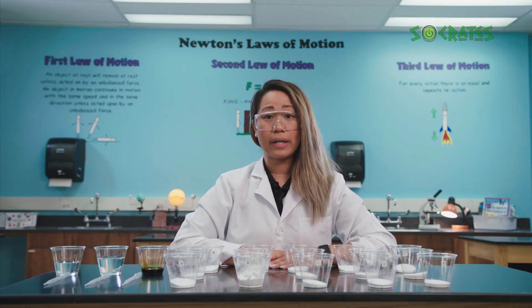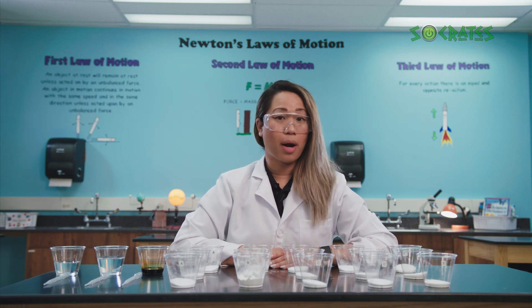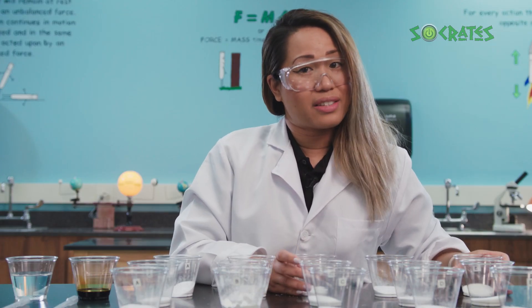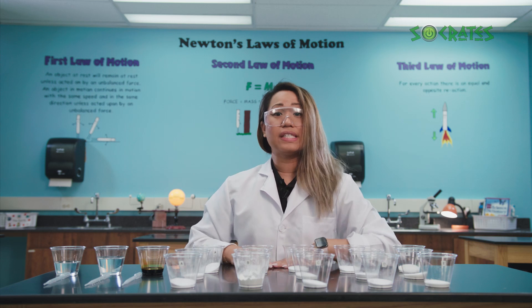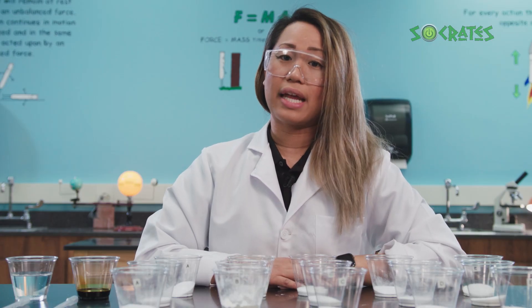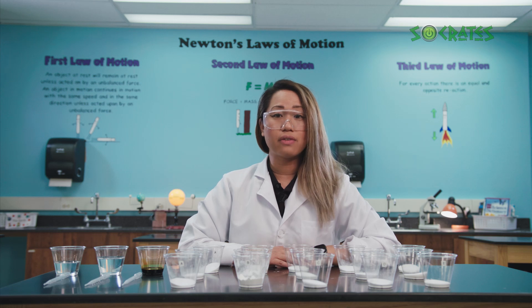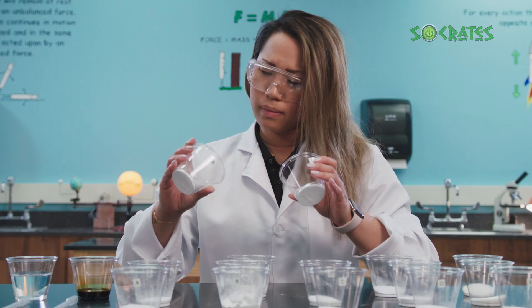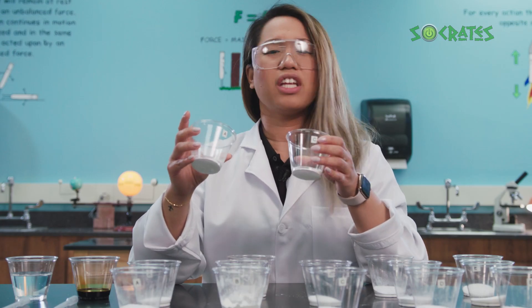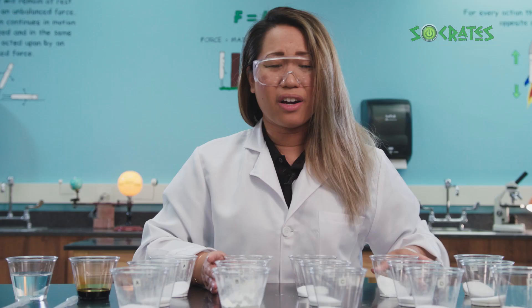Physical properties are generally pretty easy to discuss because we can see them immediately. Let's begin to fill in our properties chart by starting with color. I notice that all of these items are white. Although this is a good observation, this wouldn't really help us determine the difference between them. Let's move on to the next observable property: grain size. This means how large are the individual pieces of the substances. I can see that salt and sugar are very small — just tiny crystals. It seems borax, cornstarch, and baking soda are more of a powder.